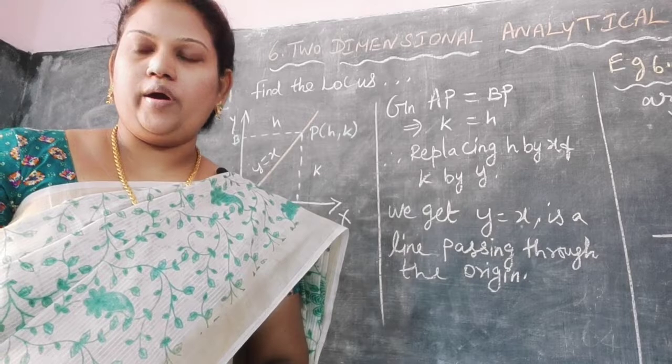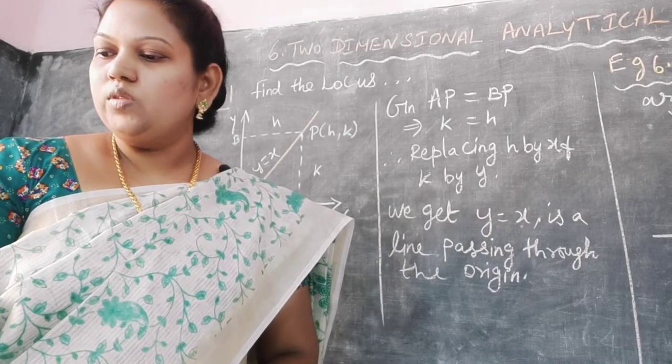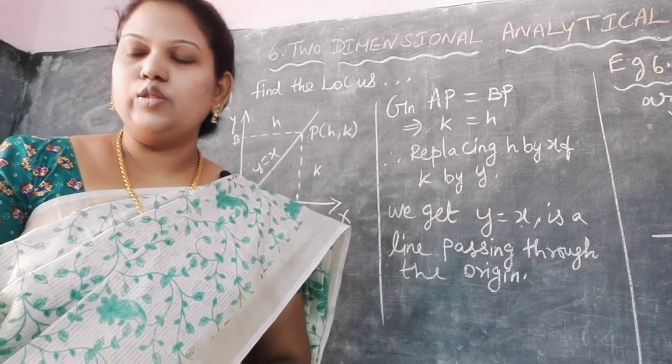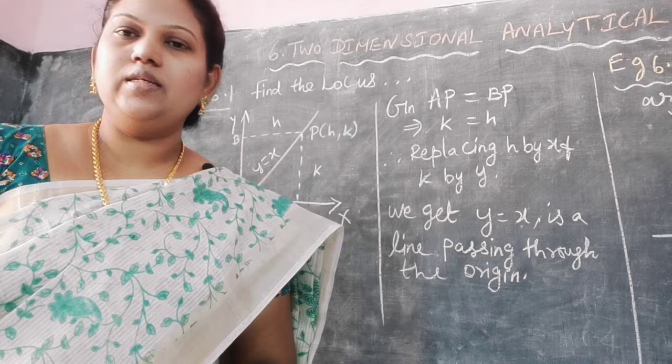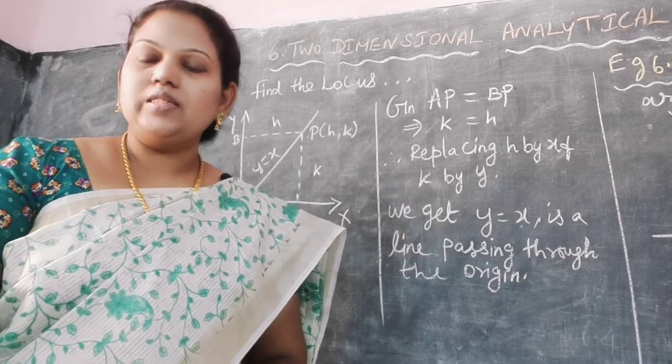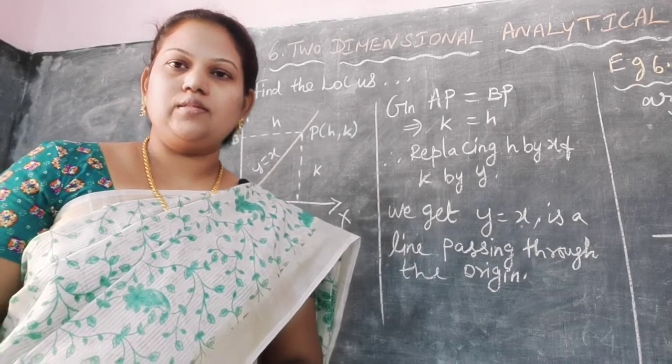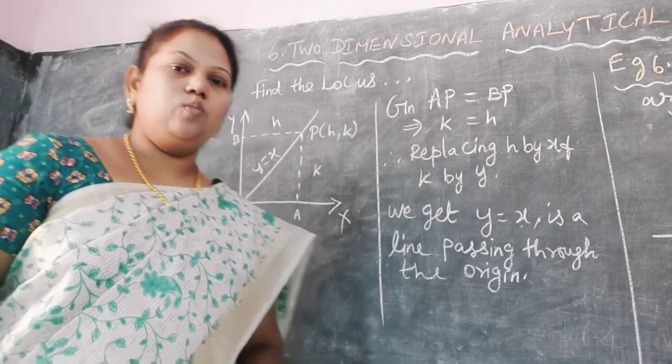Find the locus of a point which moves such that its distance from the x-axis is equal to the distance from the y-axis. It is a very easy one-mark question.